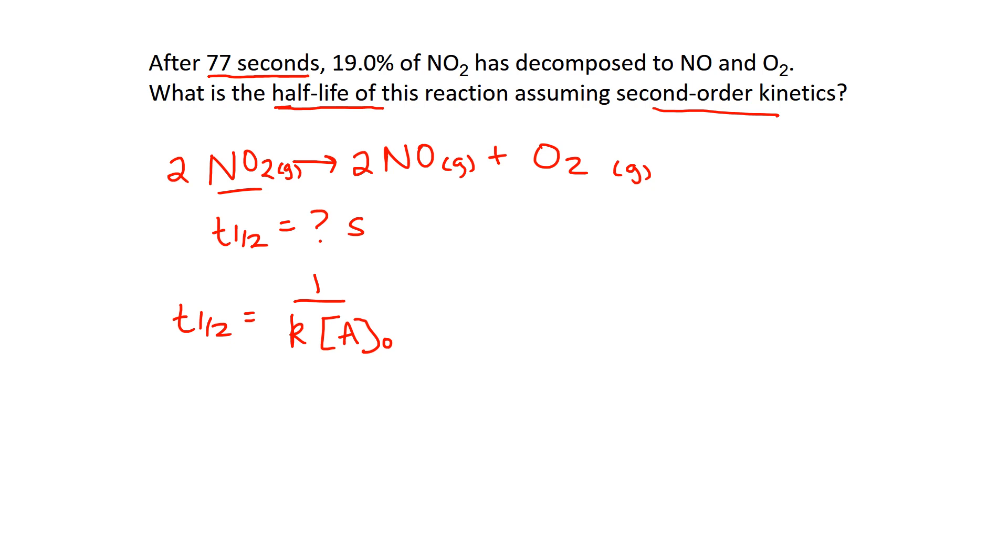So I know that half-life. The second thing I know is the actual integrated rate law for that. So because it's second order, I go 1 over the concentration of A or our reactant at some time equals a positive KT plus 1 over the concentration of A initial. So because this is second order kinetics, I automatically know this equation for half-life and this equation that's the integrated rate law.